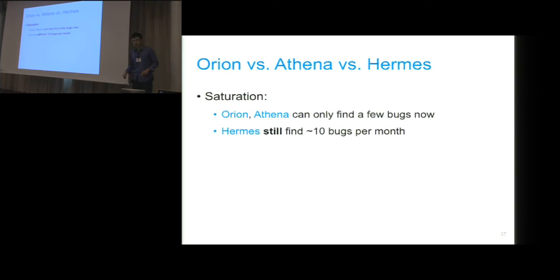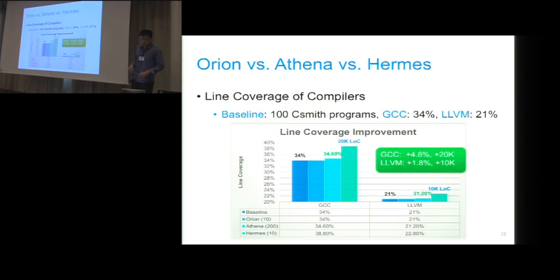Next, I would like to show you a detailed comparison between Orion, Athena, and Hermes. The first dimension is saturation. Both Orion and Athena have saturated for a long time. Recently, we can only find a few bugs with these two. But Hermes, we can still find around 10 bugs per month. This is the same as the bug detection rate reported in our paper, which is several months ago.